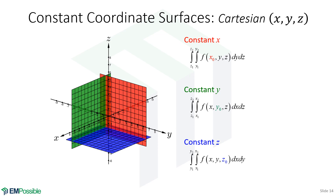In Cartesian coordinates, here are our constant coordinate surfaces. If we set x to a constant, we're integrating in this red plane, integrating over y and z. If we have a surface with constant y, that's the green surface, and we integrate over x and z. And if z is constant, we're integrating over this blue plane, integrating just over x and y.